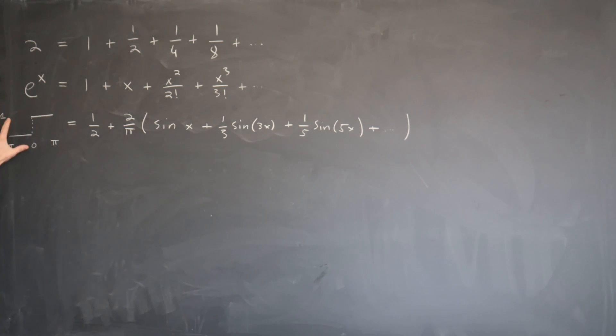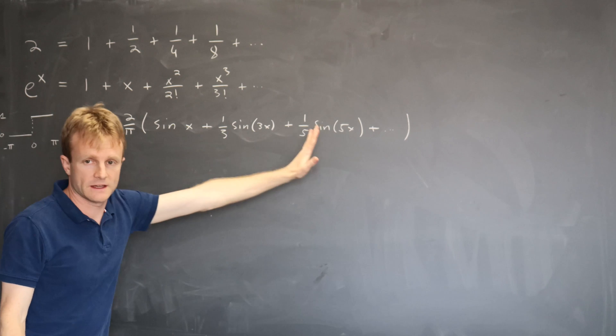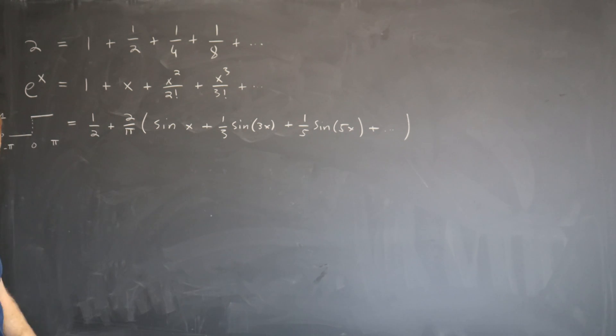So this is a funnier kind of function. It's a step function. I just drew a picture instead of a formula, but it's defined to be 0 from minus pi to 0 and 1 from 0 to pi. And then it's given on the right hand side as the series over the sine function.